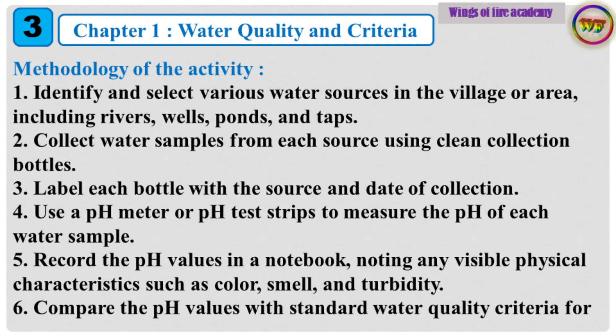Methodology of the Activity: 1. Identify and select various water sources in the village or area, including rivers, wells, ponds, and taps. 2. Collect water samples from each source using clean collection bottles. 3. Label each bottle with the source and date of collection. 4. Use a pH meter or pH test strips to measure the pH of each water sample. 5. Record the pH values in a notebook, noting any visible physical characteristics such as color, smell, and turbidity.